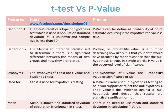In simple words, the p-value is the observed level of significance. The synonyms of t-test are t-value and Student's t-test, while the synonyms of p-value are probability value, significance, or sig. The t-test is used for hypothesis testing, while a p-value is also used in hypothesis testing to help you support or reject the null hypothesis. The p-value is the evidence against a null hypothesis.